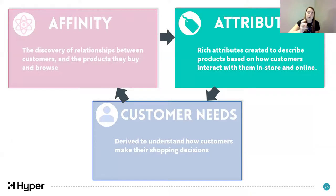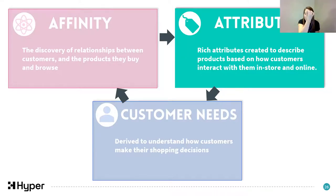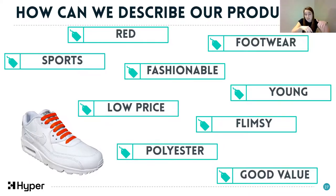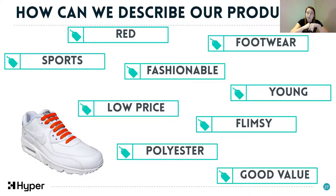Moving on to Attributes. Attributes are simply ways that you can describe products in different ways. For our shoelaces example, these are descriptors you could use to tag what the red shoelaces are. There are different ways to make these: you can use product metadata to make attributes, and then you can make rules-based attributes based on these - quite simple descriptors of what the product actually is.